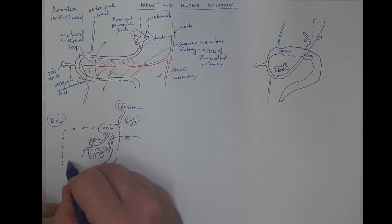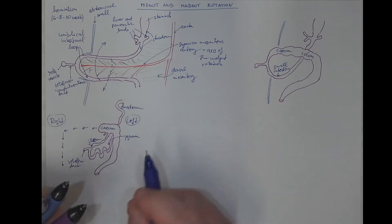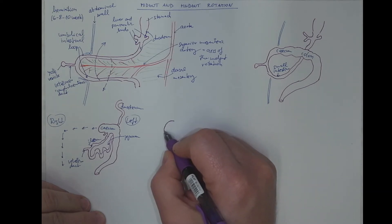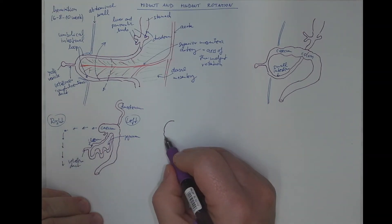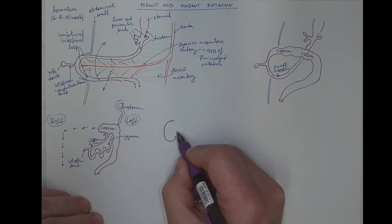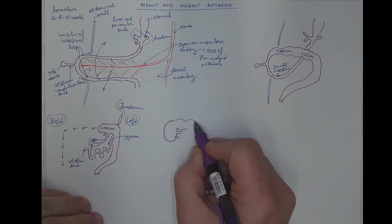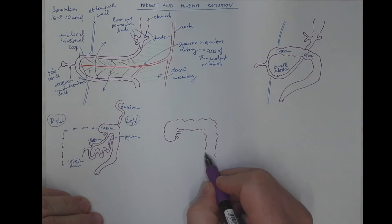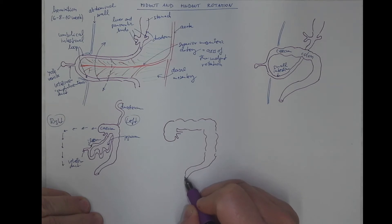This is the vitelline duct. At least what remains of it. And in the next stage we will see that the cecum has moved and formed the right colic flexure. Here is the appendix, the ileocecal junction, the transverse colon, left colic flexure, and the rest of the large intestine.